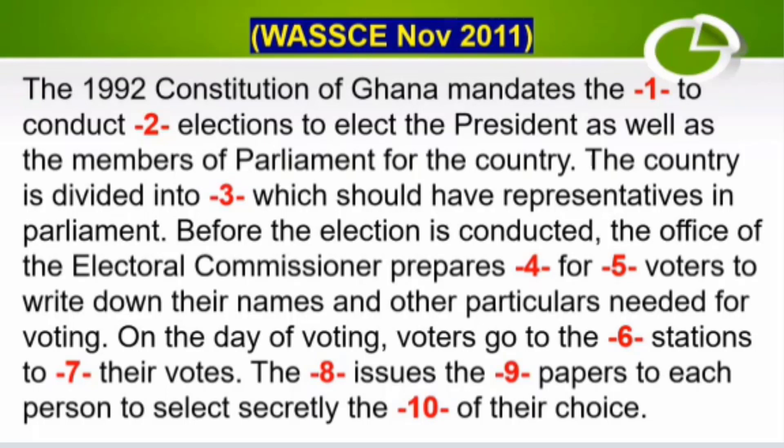The DASH issues the DASH papers to each person to select secretly the DASH of their choice. [The passage is then repeated for reading.] The 1992 Constitution of Ghana mandates a DASH to conduct DASH elections to elect the president as well as a member of parliament for the country.